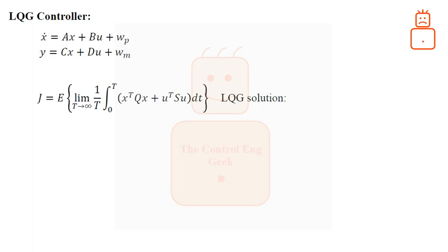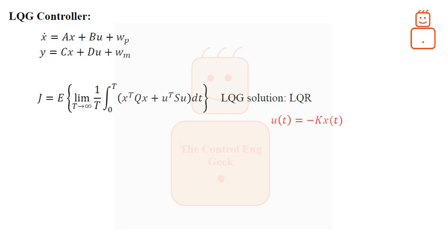The solution to the LQG problem, known as the separation theorem, is surprisingly simple and elegant. It consists of first determining the optimal control to a deterministic linear quadratic regulator, or LQR problem — namely, the LQG problem defined above but without WP and WM noises. The solution to this problem can be written in terms of a simple state feedback law. K is a constant matrix which is easy to compute and is clearly independent of the statistical properties of the plant noises. But when the states X are not available or not measurable, we need to replace them by their estimate X-hat.